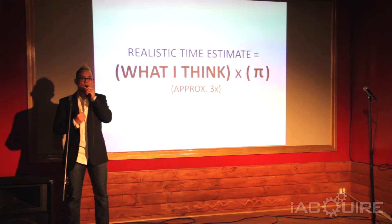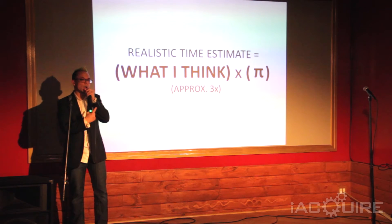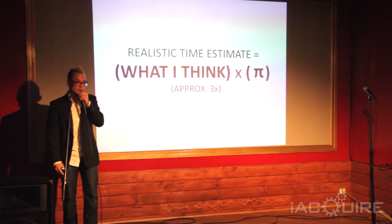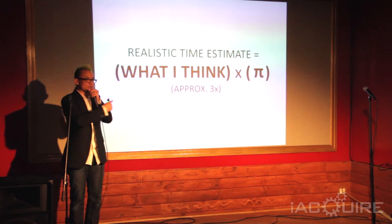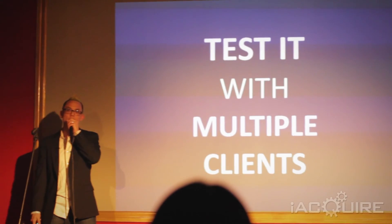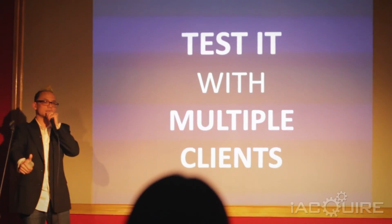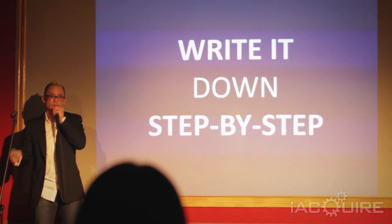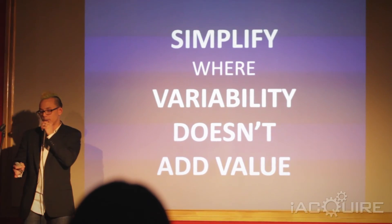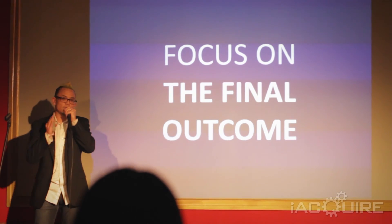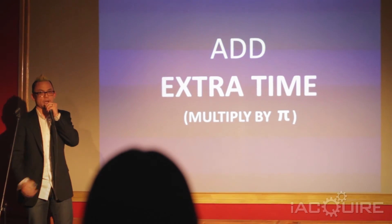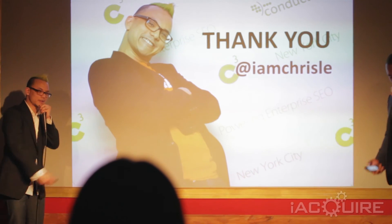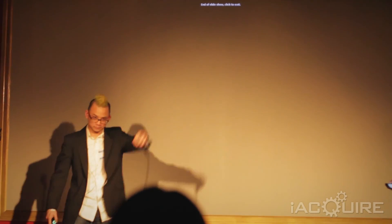Estimating time for developers is a hard thing to do. When I was doing consulting, I had this funny rule: I'd take whatever time I thought it was going to take and multiply it by pi — 3.14159265. It's a very nerdy thing to do, but it's really accurate and it worked out pretty well. So to recap: number one, test your process with multiple clients. Number two, write it down step-by-step. Simplify where variability doesn't add any value. Focus on the final outcome. And add extra time — multiply by pi if you really want to. My name is Chris Lee. Go big or go home. Thank you.